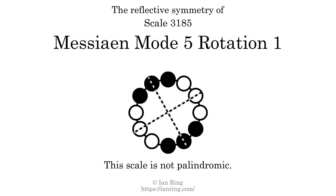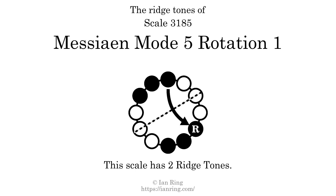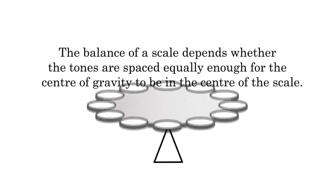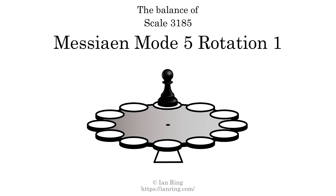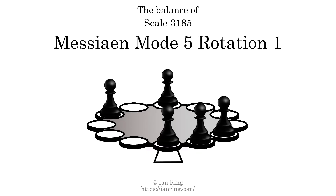This scale has reflective symmetry across two axes positioned at two semitones and five semitones above the root. This scale has a different pattern of intervals ascending and descending, so it is not palindromic. This scale has two ridgetones, at the positions here and here. The balance of a scale depends on whether the tones are spaced equally enough for the center of gravity to be in the center of the scale. This scale is balanced.